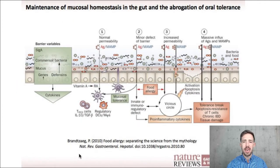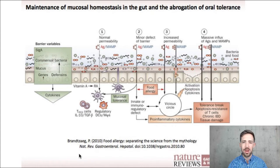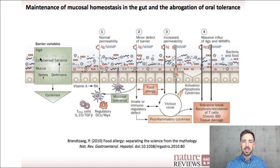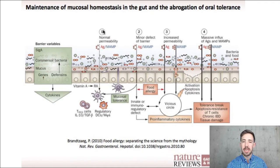Here's a graphic we use a lot in our clinic, from Nature Reviews Gastroenterology and Hepatology. The point is to show that there are multiple forms or multiple stages of leaky gut. We use this to describe the spectrum to our patients. Leaky gut is a spectrum, and gut damage is a spectrum. Some of the variables that determine where you fall on that spectrum include: do you have a lot of secretory IgA, good bacteria, or mucus production? Going left to right — one through four — four being the worst, one being the best.